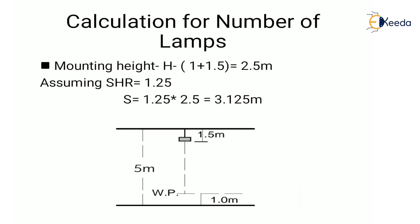Next, we calculate the number of lamps. First, we find the mounting height HM. The total height is 5 meters, minus 1 meter for the working plane height, minus 1.5 meters for the mounting height of the lamp, giving a mounting height of 2.5 meters. Assuming a space-to-height ratio of 1.25, the spacing works out to 3.125 meters.